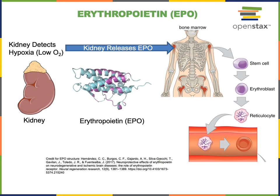The process of hematopoiesis is regulated by hormones. For example, the hormone erythropoietin, commonly abbreviated EPO, is a glycoprotein hormone secreted by the kidneys in response to low oxygen levels. Low blood oxygen levels are also known as hypoxia. In response to hypoxia, the kidneys release EPO, which then stimulates the process of erythropoiesis in the red bone marrow.